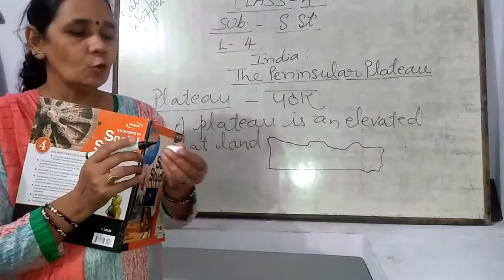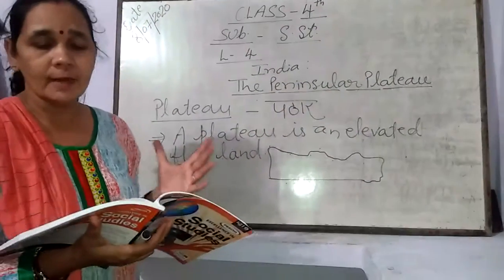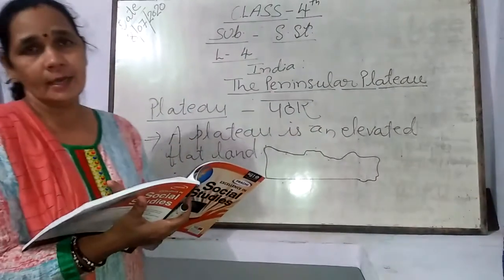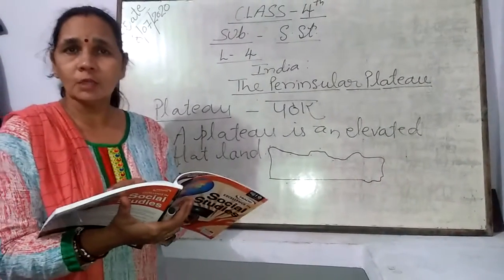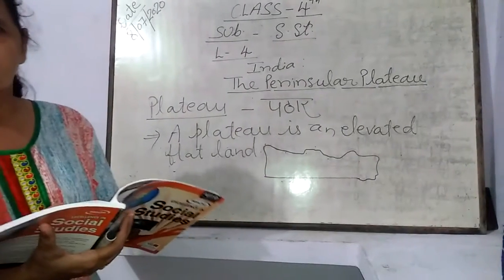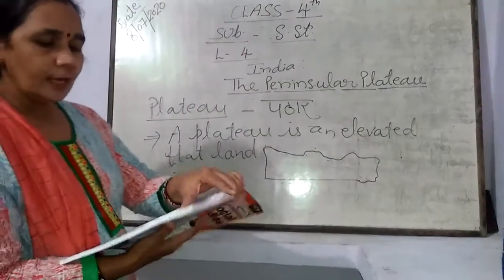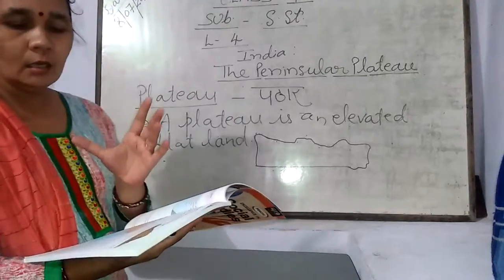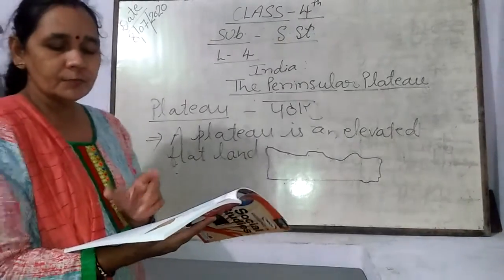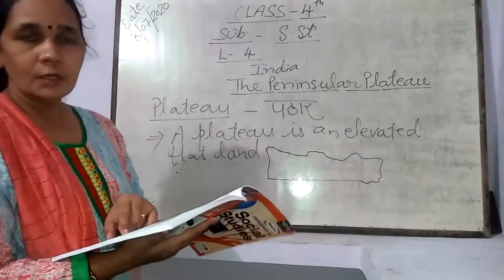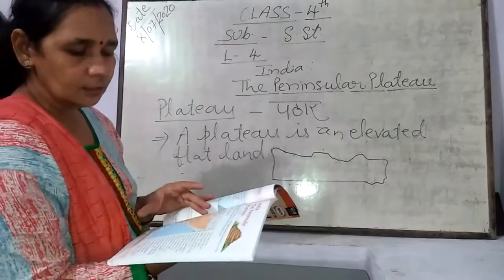Now the Peninsular Plateau — where is it located in India? It is located to the south of the Northern Plains. This Plateau is covering nearly half of the area of the land in India. It is a triangular shape, with a broad base in the north and a narrow apex in the south.